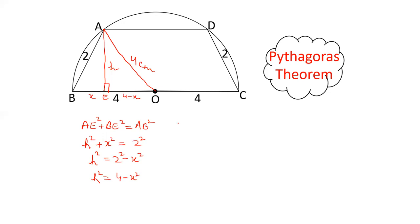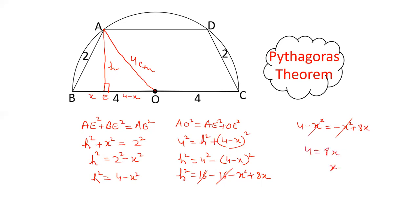Now in triangle AOE. AO² equals AE² plus OE². AO is 4 cm, 4². AE is h, OE is 4 minus x whole squared. So h² equals 4² minus (4 minus x)². h² equals 16 minus, (a minus b)² equals a² plus b² minus 2ab. 16 minus (16 plus x² minus 8x). This h² equals minus x² plus 8x. This minus x² cancels, 4 equals 8x. x value is 4 by 8. So x value is 1/2.